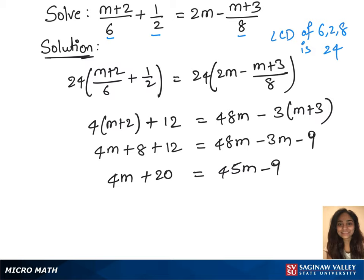Subtract 45m and 20 on both sides. We have 4m minus 45m equals minus 9 minus 20, so we have minus 41m on the left side equals minus 29. And divide minus 41 on both sides, so we have m equals 29 over 41, which is our final answer.